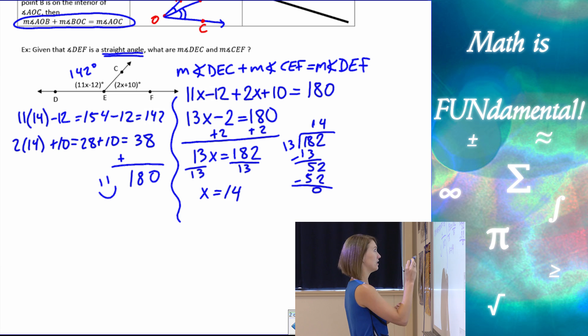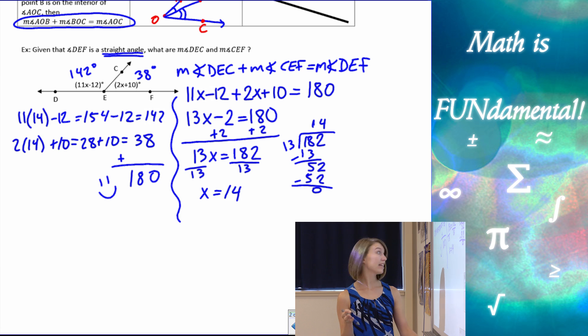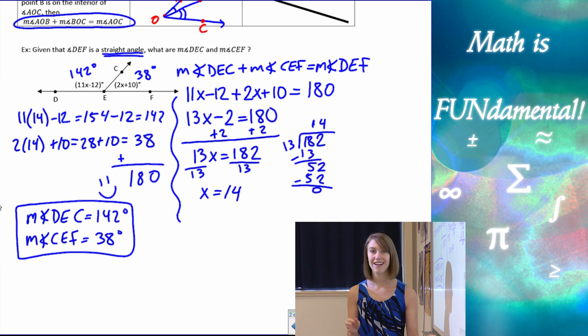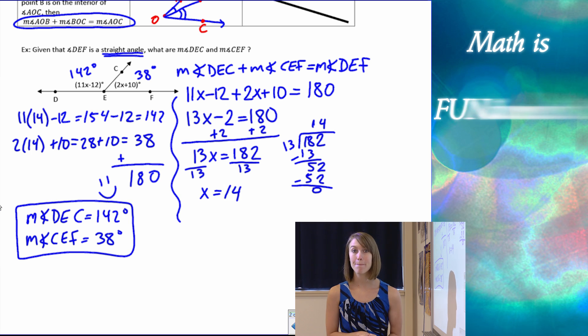We have 38 for this angle over here. So if we want to write out our answers and box them, let's do that right over here. The measure of angle DEC is going to be 142 degrees. And the measure of angle CEF is going to be 38 degrees. And that concludes our lesson for today. Thanks for watching. And remember, math is fundamental.